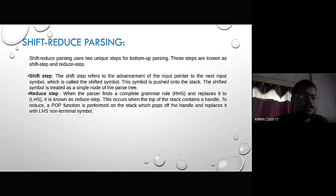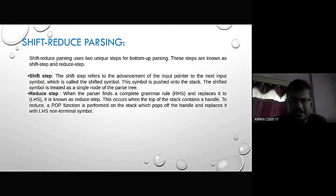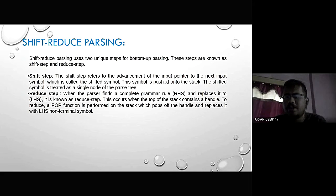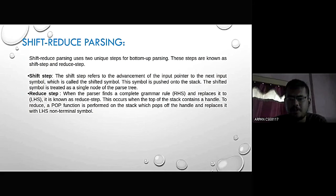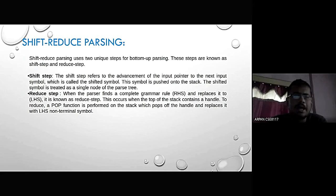The reduce step occurs when the parser finds a complete grammar rule on the right-hand side and replaces it with the left-hand side — this is known as the reduce step. It occurs when the top of the stack contains a handle. A pop function is performed to remove the handle and replace it with the left-hand side non-terminal symbol.